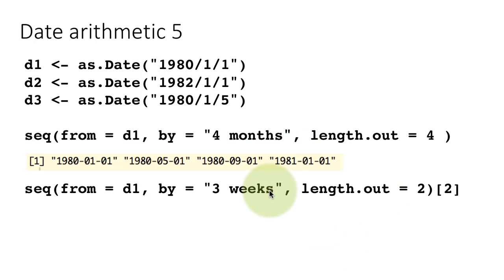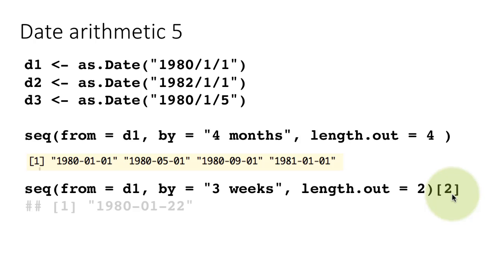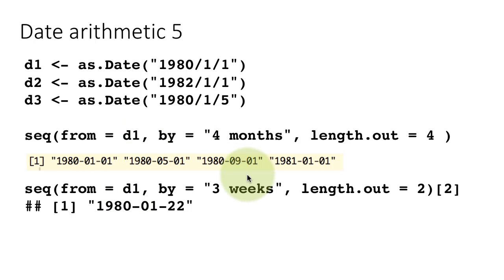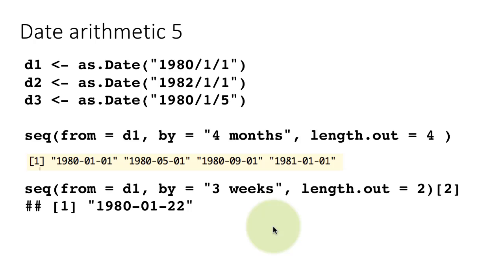You can sequence by '4 months' or '3 weeks'. Since seq() generates a vector of dates, you can index into it — for example, seq(D1, by='3 weeks', length.out=2)[2] gives you the second element, which is three weeks from D1. So January 1 plus three weeks is January 22.